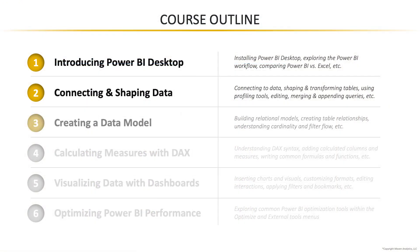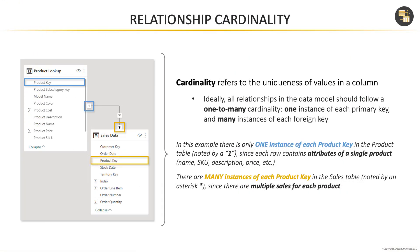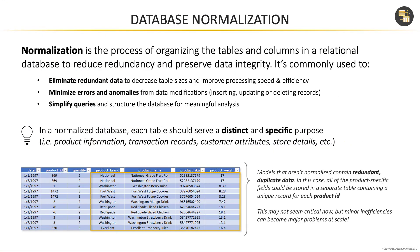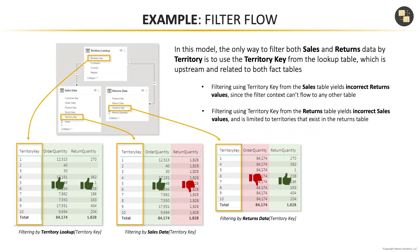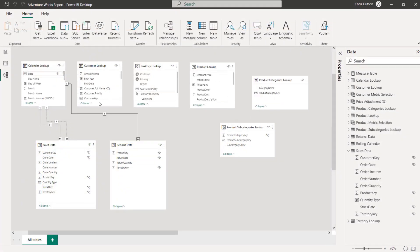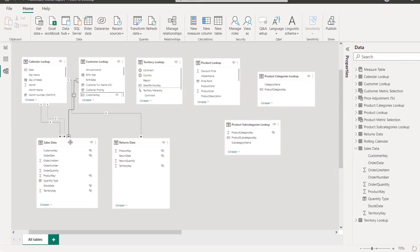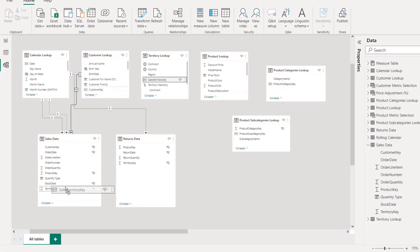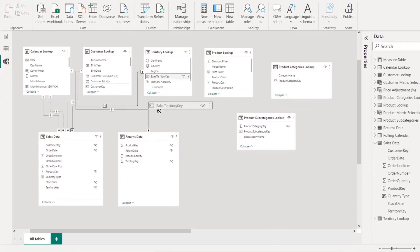Next we'll dive into relational data modeling, introduce topics like cardinality, normalization, filter flow, and star schemas, and build our AdventureWorks model from the ground up.